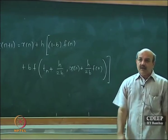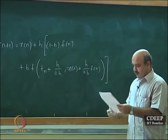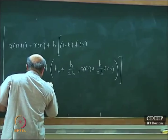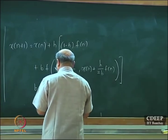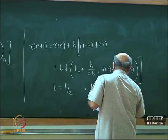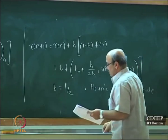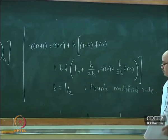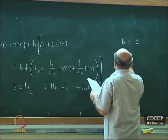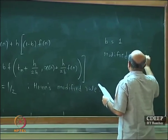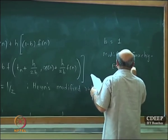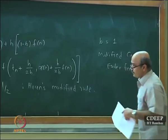Different choices of the free parameter b give rise to different second-order methods. Choosing b = 1/2 gives the modified Euler rule. Choosing b = 1 gives the modified Cauchy-Euler formula, and so on.